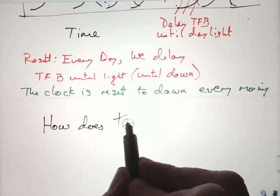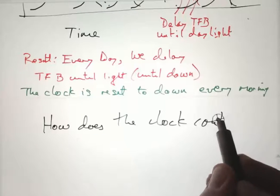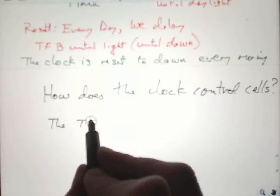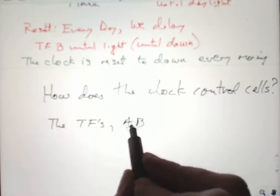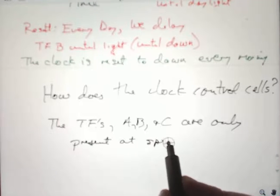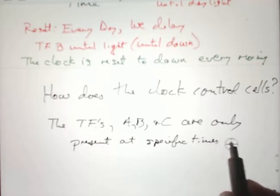So how does the clock control cells? How does it control what happens at one time of day versus another? Well, the transcription factors A, B, and C are only present at specific times of day or night.